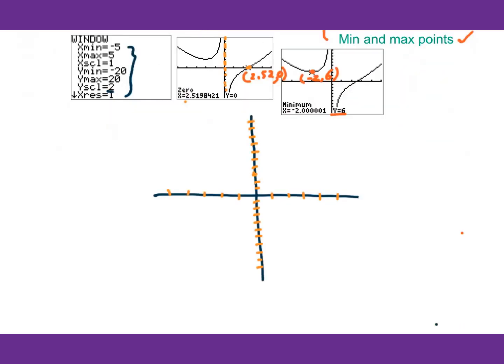Now we can sketch the graph. Make sure for x: negative 5 here is 5. Then this will be 20, here is negative 20. Find the negative 2, 6 — this will be here. Find the 2.5, 2 here. Then you just need to sketch the graph. We have a vertical asymptote line, that is x equals to 0, so this will be the asymptote line. This point is the minimum point.